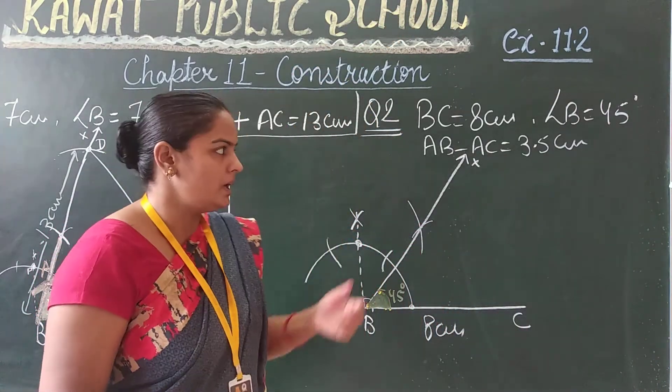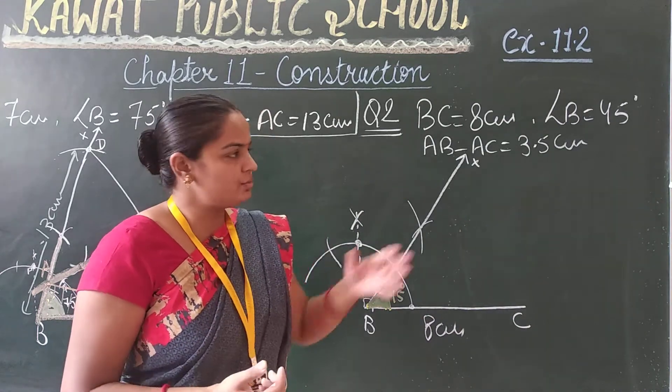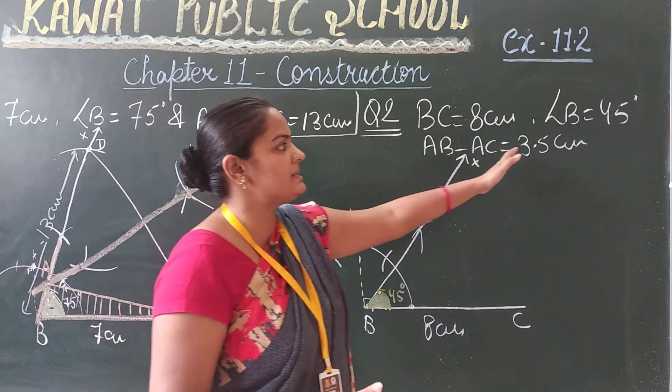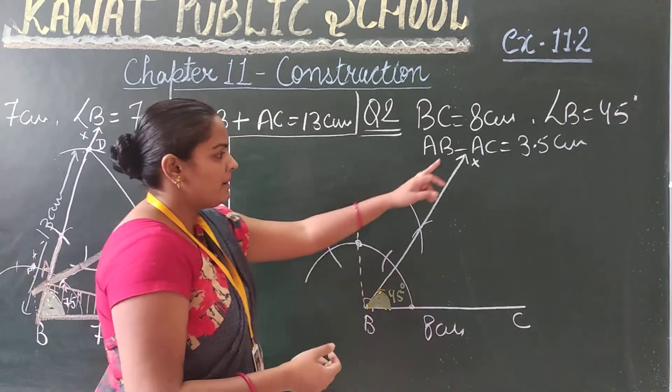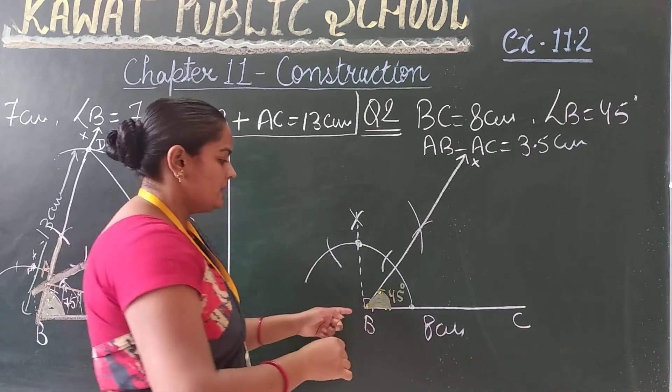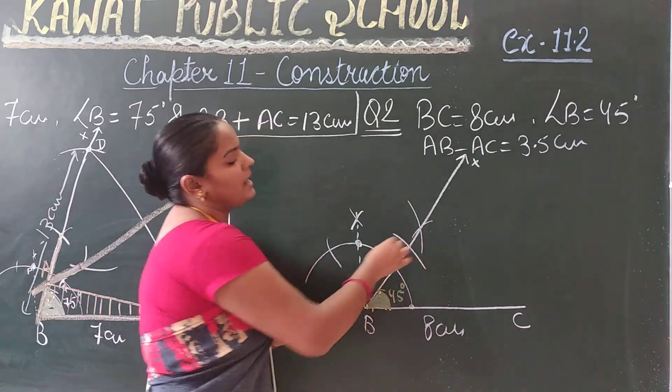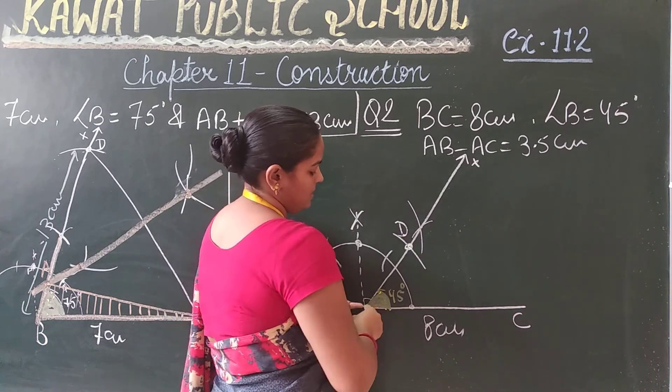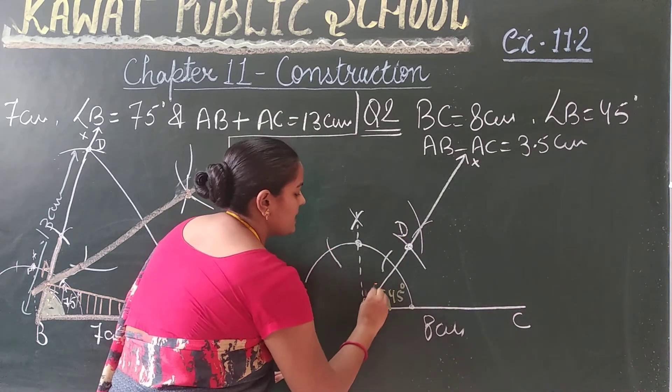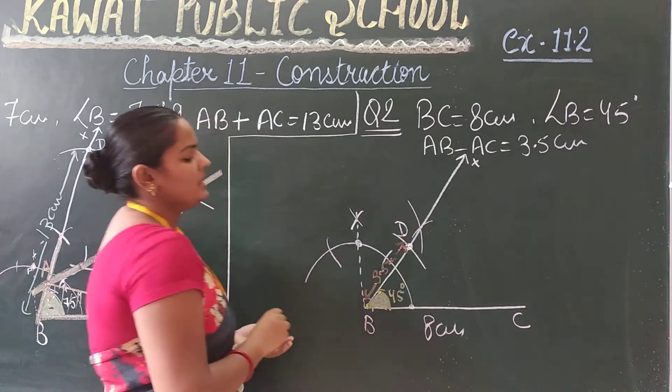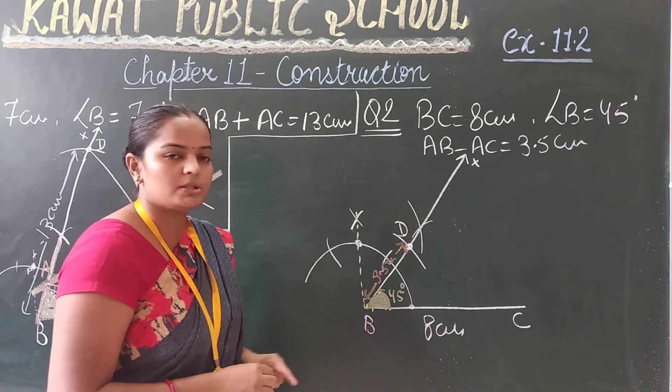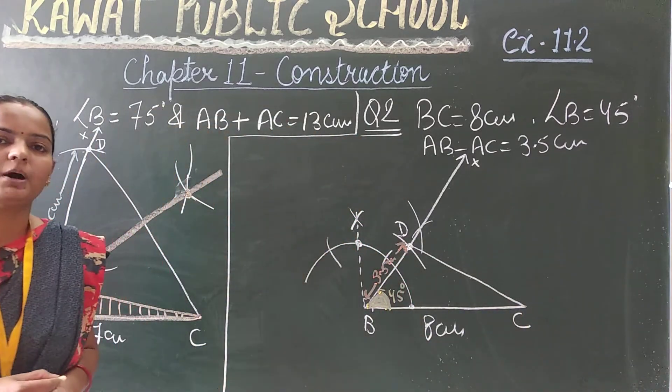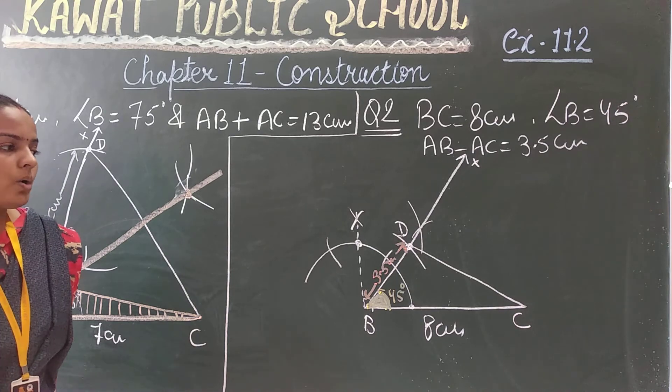Now how much difference is given? Difference between two sides, AB minus AC is 3.5 cm. Again we will do this work on the base angle line. We will measure 3.5 cm from point B. Cut here, which we call D. Now this is how many cm? Which is 3.5 cm. This length here, which is BD, which is 3.5 cm.